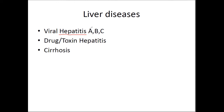Liver inflammation can be caused by different reasons. One pretty common reason is viral infection. We have different kinds of viruses: hepatitis A virus, hepatitis B virus, and hepatitis C virus, and also D and E. So basically we have five different kinds of hepatitis viruses, but A, B, and C are more common than D and E. So we are only talking about hepatitis A, B, and C here.